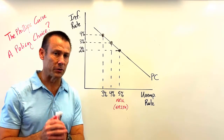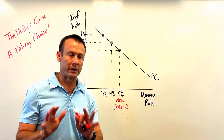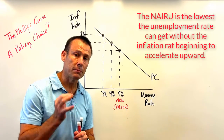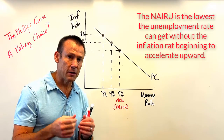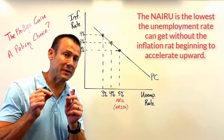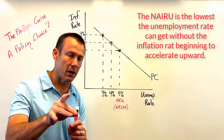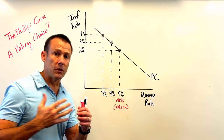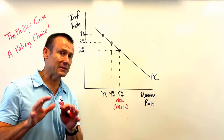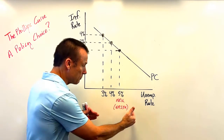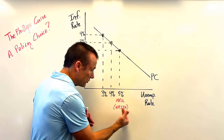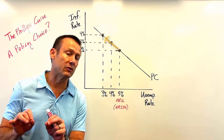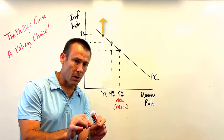NAIRU stands for the Non-Accelerating Inflation Rate of Unemployment. The definition: the NAIRU is the lowest the unemployment rate can get without the inflation rate beginning to accelerate upwards. If we try to get a lower unemployment rate below the NAIRU, not only will the inflation rate tick up — it will begin to accelerate upwards.